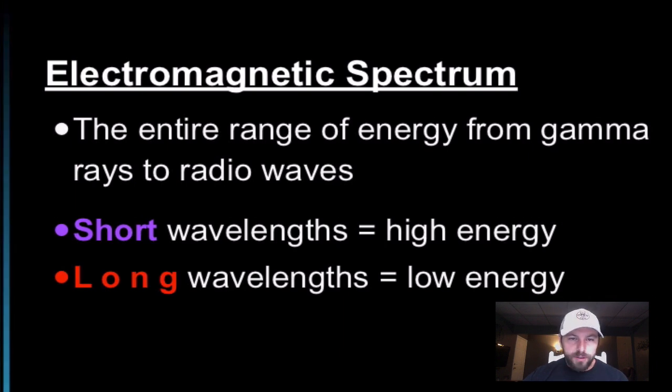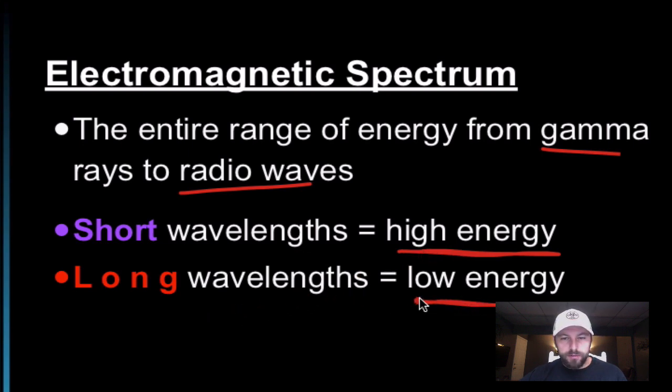The electromagnetic spectrum, the entire range, goes from gamma to radio waves. Short wavelength equals high energy. Long wavelengths equals low energy. We'll get back to this in a moment.